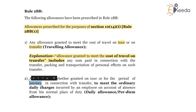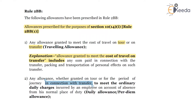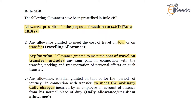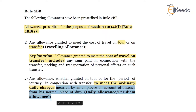The second allowance: any allowance — whether granted on tour or for the period of journey in connection with transfer — to meet the ordinary daily charges incurred by the employee on account of absence from his normal place of duty. This can be termed as daily allowance or per diem allowance. For example, a person seconded outside India to a sister entity will incur daily expenses for traveling from accommodation to office outside India.